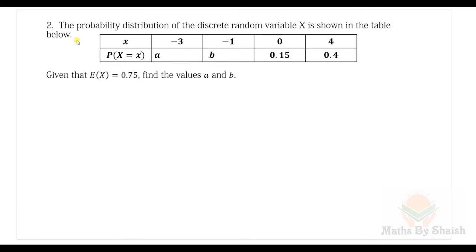Here is question two. It is a probability distribution because the values −3, −1, 0, and 4 are attached with their probabilities. If values were attached with frequencies it would be a frequency distribution. The discrete random variable X is shown in the table, and given that E(X) = 0.75, we need to find the values of a and b. With two unknowns, we need two equations.